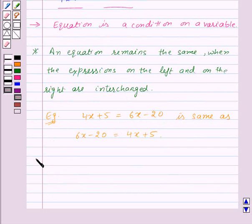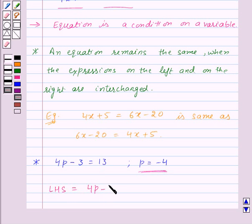Now let's see how to check whether the given value of the variable is the solution to the given equation or not. Suppose we are given the equation 4p minus 3 is equal to 13 and we are given the value of p as minus 4. Now for this, we will substitute the value of p as equal to minus 4 in the LHS and RHS separately. And if we get LHS is equal to RHS, then that means p equal to minus 4 is the solution of the given equation. So let's start with LHS, which is equal to 4p minus 3.